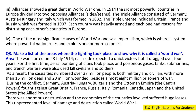Alliances played a great role in World War One. In 1914, the six most powerful countries in Europe divided into two opposing alliances. The Triple Alliance consisted of Germany, Austria-Hungary and Italy, formed in 1882. The Triple Entente included Britain, France and Russia, formed in 1907. Each country was heavily armed and each had reasons for distrusting the others. One of the most significant causes of World War One was imperialism — a system where a powerful nation rules and exploits one or more colonies.